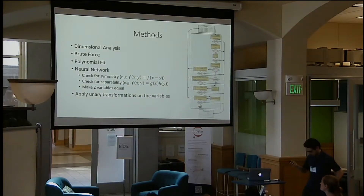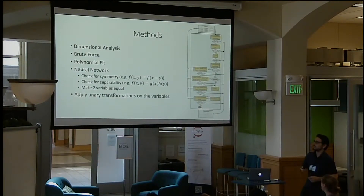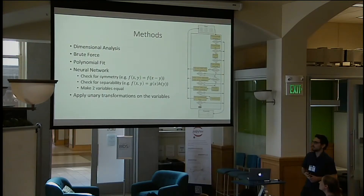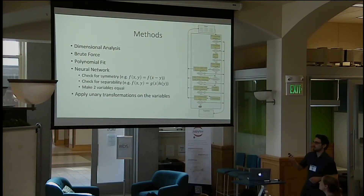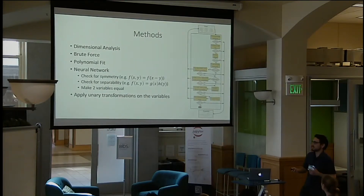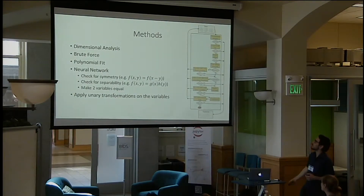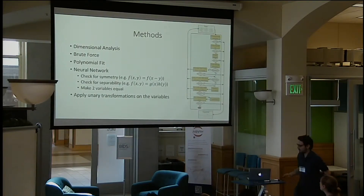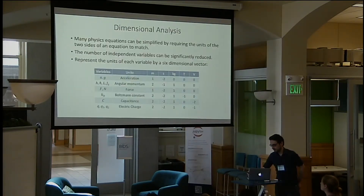We also train a neural network whose goal is to find patterns in the data, searching for things like translational symmetry, separability, the effect of making two variables equal, and we also apply several unary transformations to the variables, such as taking the square root or exponentiating the value of the function. Here is the flow of our algorithm, and I'm going to go through the main components of it.